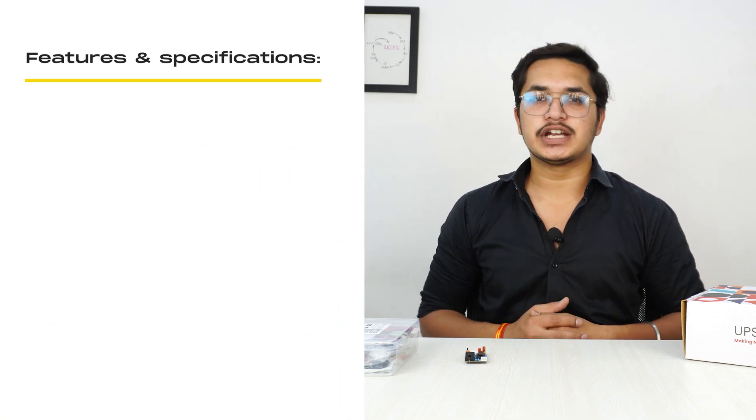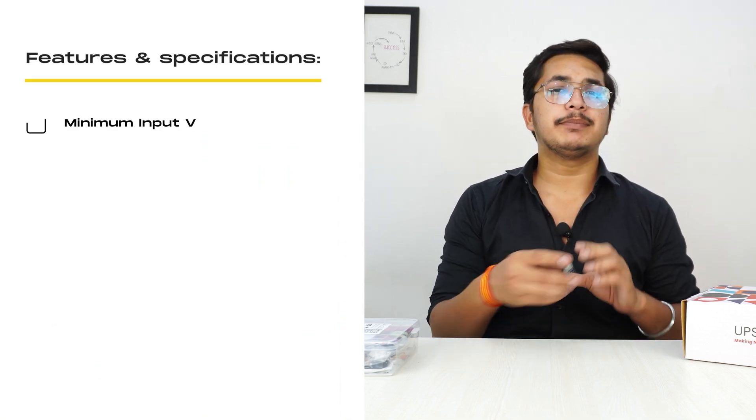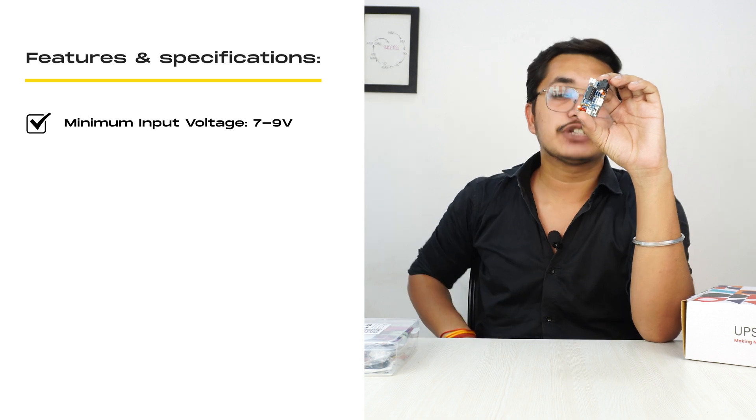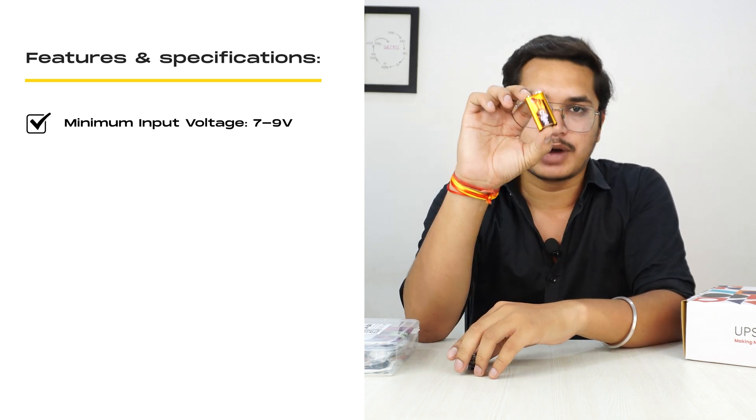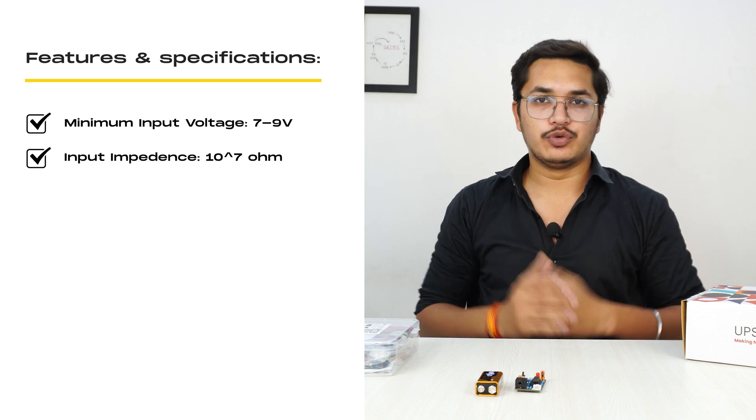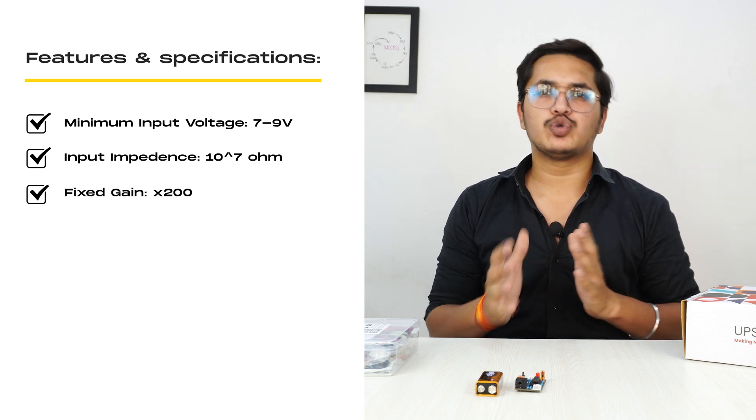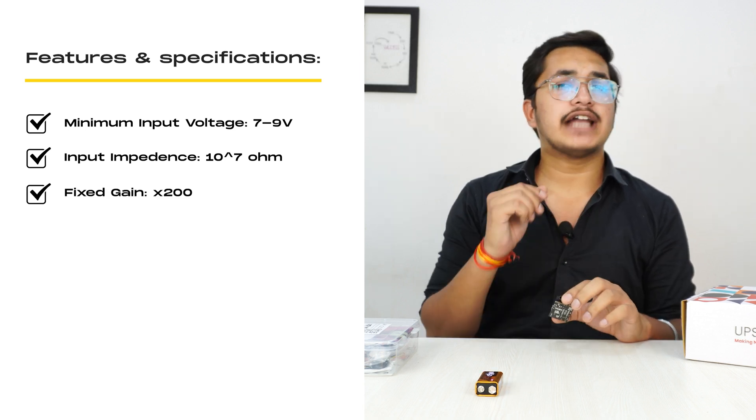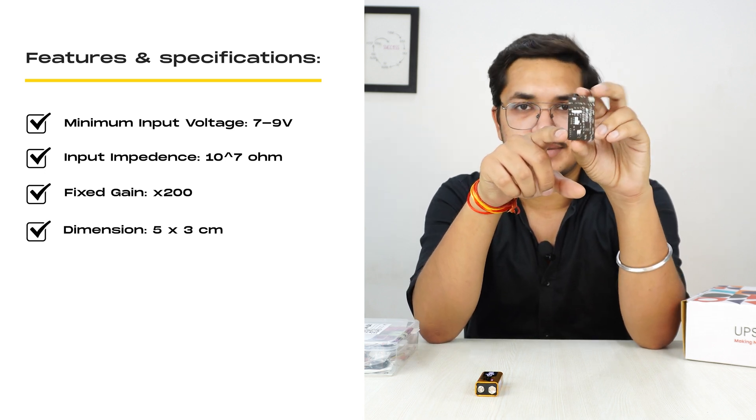It has a minimum input voltage of 7 to 9 volts, and that's why we will be using this battery to power it. It has input impedance of 10 raised to the power 7 ohms, a fixed gain of around 200 times. Talking about the dimensions, it has a length of 5 centimeters and a breadth of 3 centimeters.